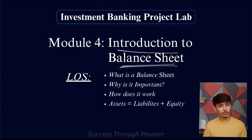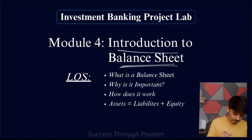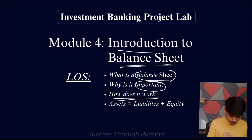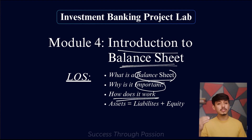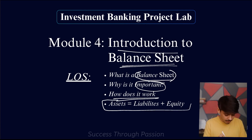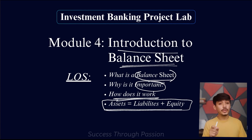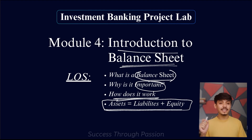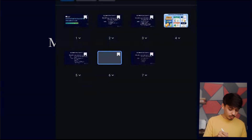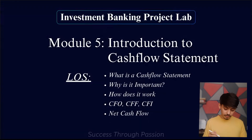Module number four is Introduction to Balance Sheet. Here we will understand the second element of the three-statement financial model. We'll cover what a balance sheet is, why it is important, and how it works — understanding the flow of the entire balance sheet. We will tally it using the formula: Assets = Liabilities + Equity, which serves as proof that your entire financial model is correct and properly integrated.